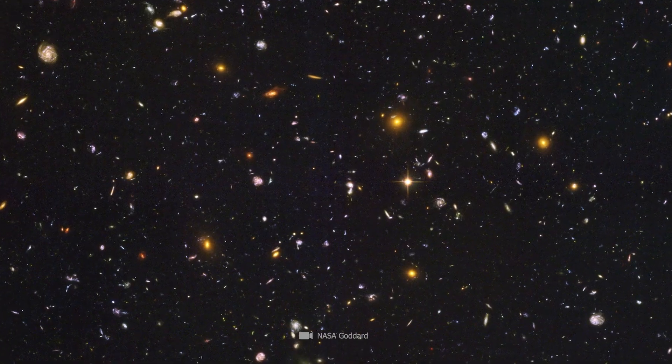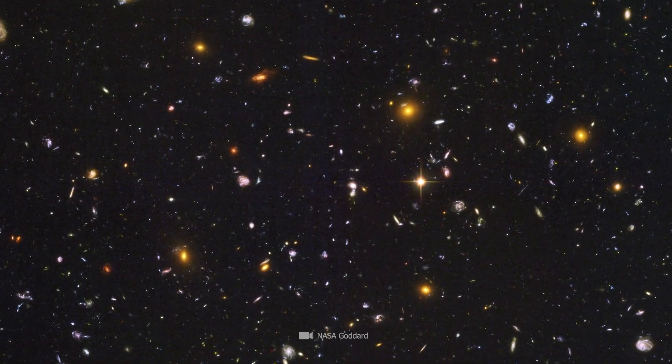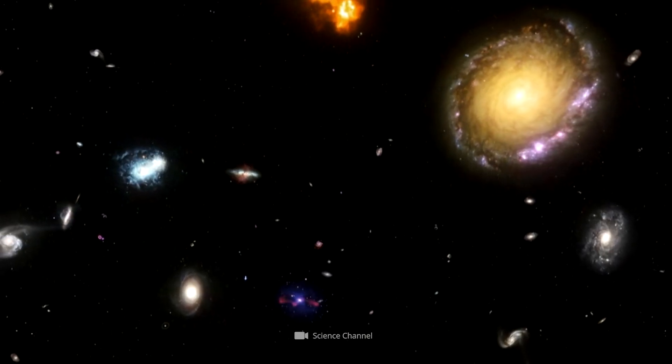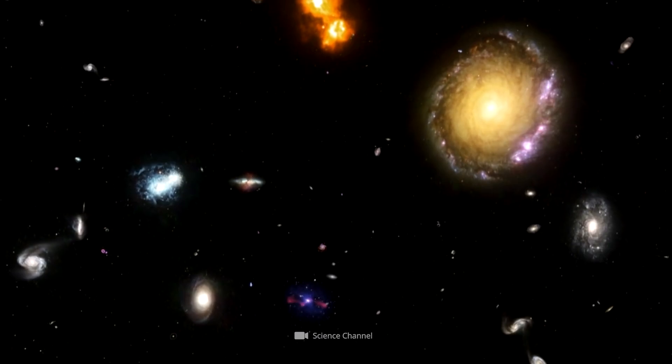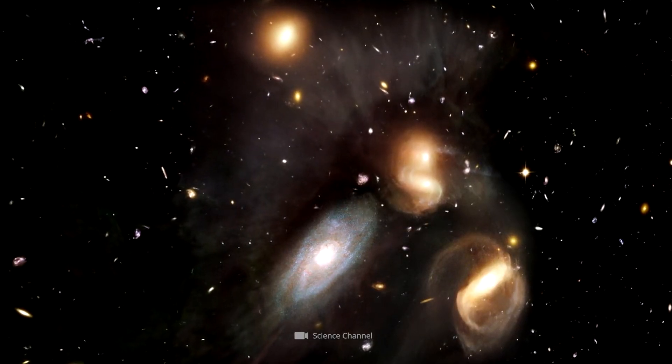In astronomy, you would expect that as an object, like a galaxy, gets further and further away, its angular extent gets smaller and smaller. And this is true, but only up to a certain point.